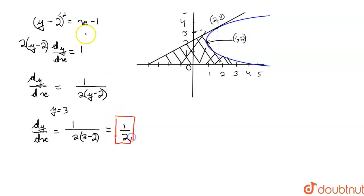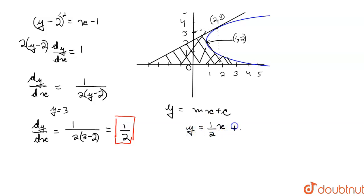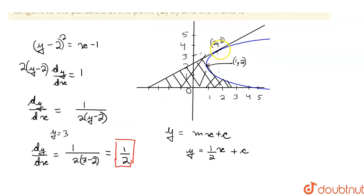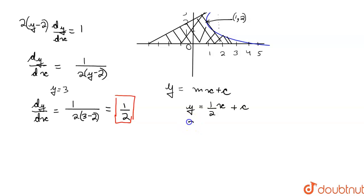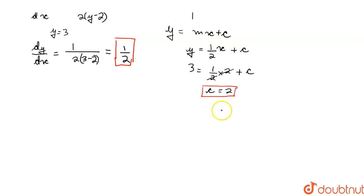Now we write the straight line equation using slope 1/2. We write y = (1/2)x + c. This tangent passes through (2, 3), so putting y = 3 and x = 2: 3 = (1/2)(2) + c, giving c = 2. So our tangent equation is y = x/2 + 2.